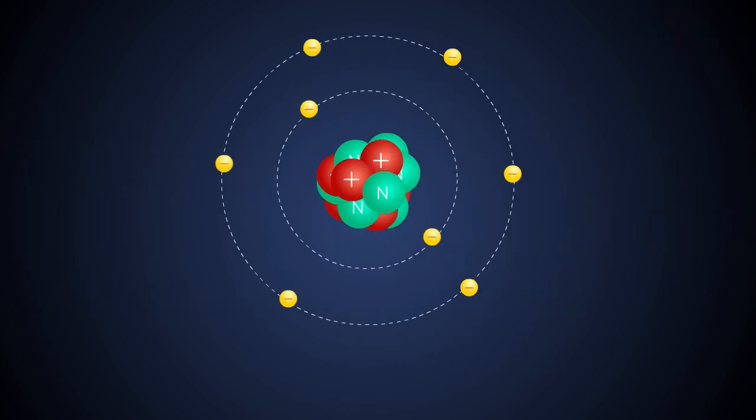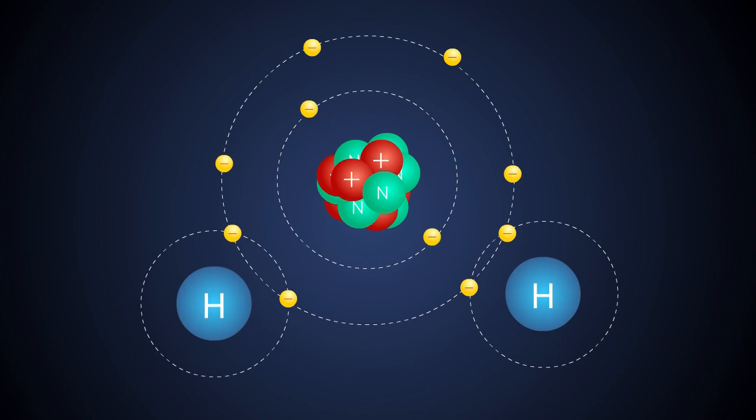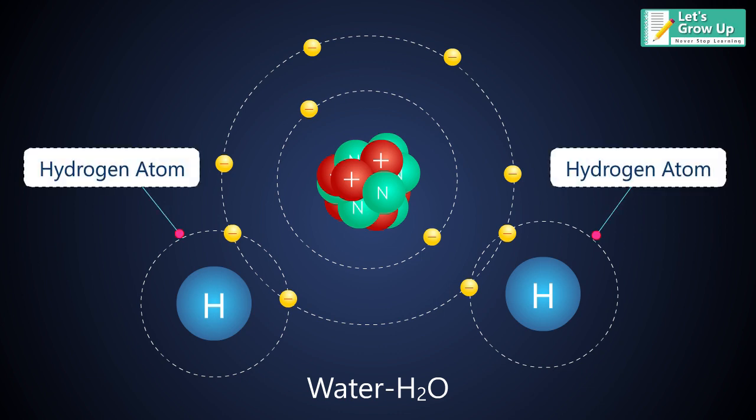When the chemical symbol of a molecule is written out, you can distinguish it from an atom by the subscript following the element symbol which indicates how many atoms are present.